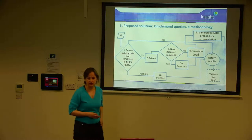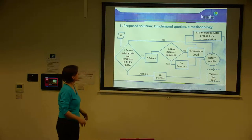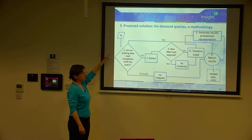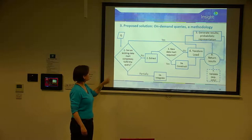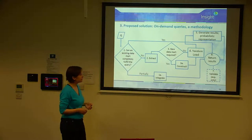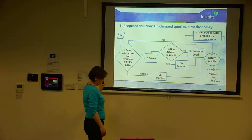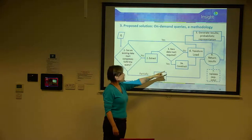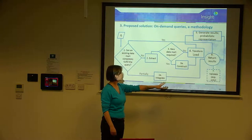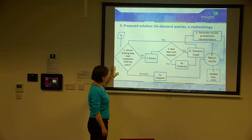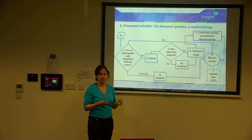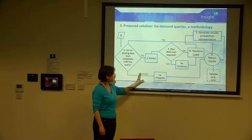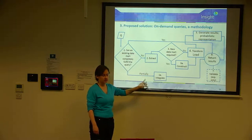In broad strokes, here's what my methodology looks like. A query comes in through a system interface and the first question is: can an existing data mart completely fulfil the query? There are three possible outcomes. If yes — easy, return the results, and at the experimental stage validate them. The second possibility is that no single data mart can address the query, but multiple ones can partially address it and together they can — so we look at integration strategies for those data marts.